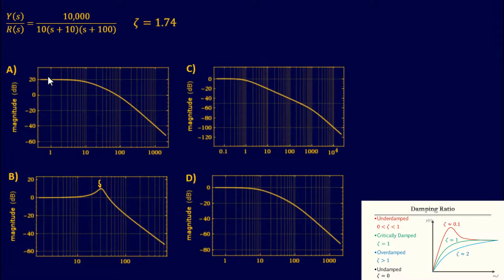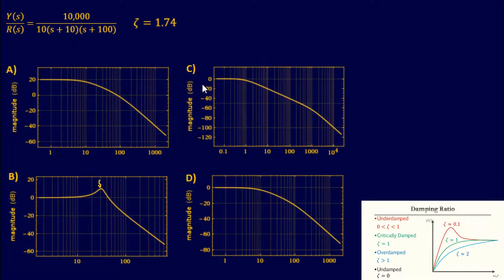Our damping ratio is greater than one, which means it's slightly overdamped — close to critical but over it. So we won't have that ripple or notch seen in underdamped responses. Looking at the four plots: plot B shows a ripple and then slopes down, which is characteristic of an underdamped system with damping ratio less than one. So we can eliminate B. That leaves A, C, or D.